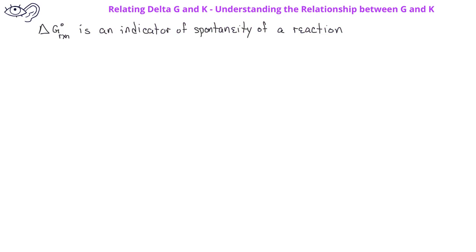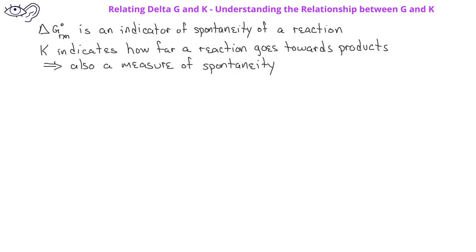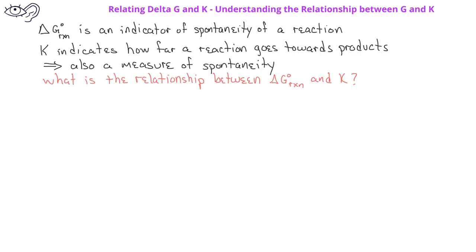In previous lessons, we saw that the standard free energy change for a reaction is an indicator of the spontaneity of a reaction. Also in previous lessons, we saw that the equilibrium constant K indicates how far a reaction goes towards products, which is also a measure of the spontaneity of a reaction. Therefore, there should be a relationship between the standard free energy change for a reaction and the equilibrium constant K.